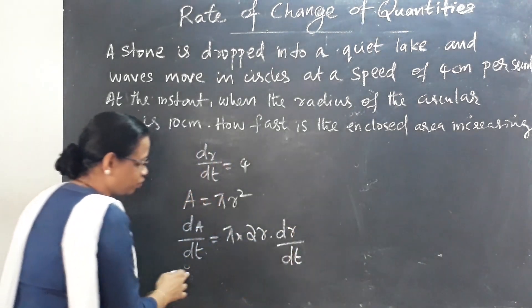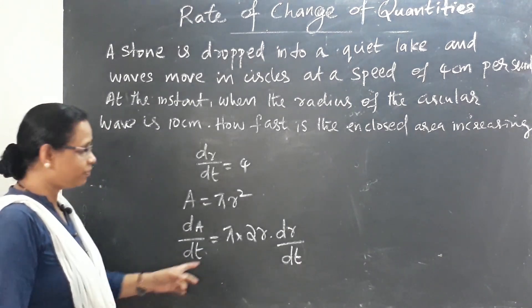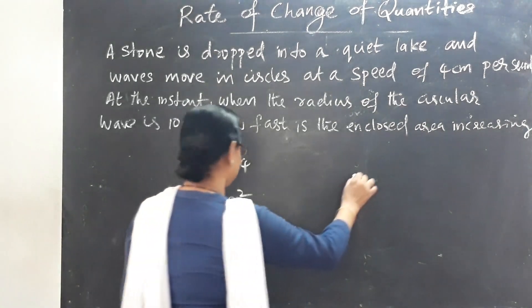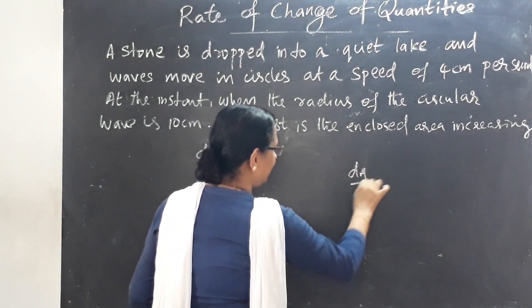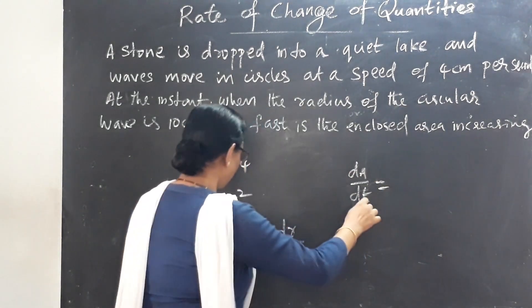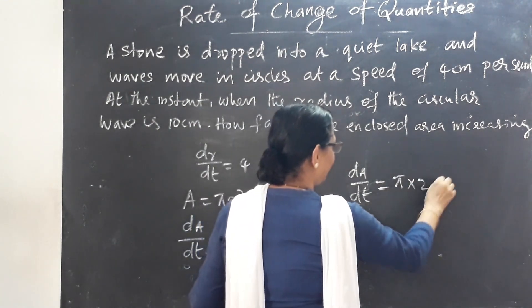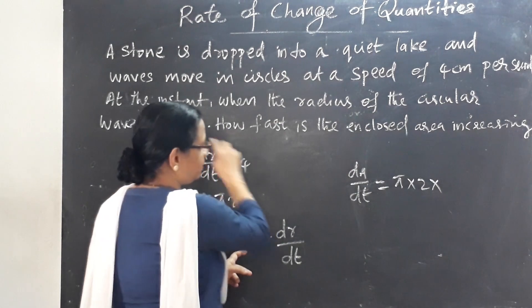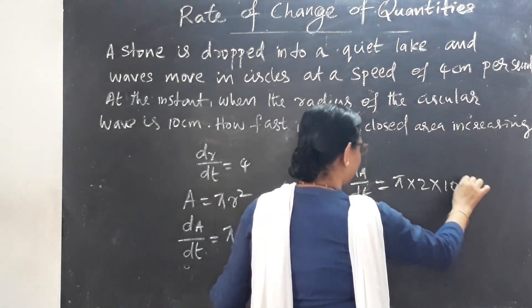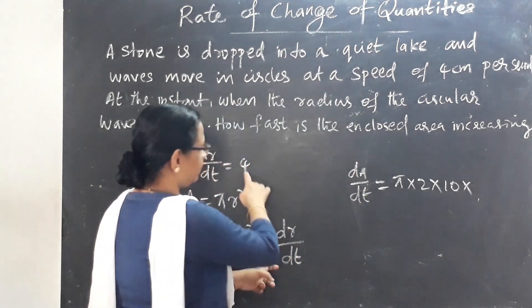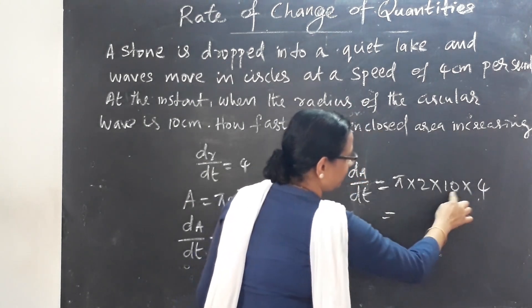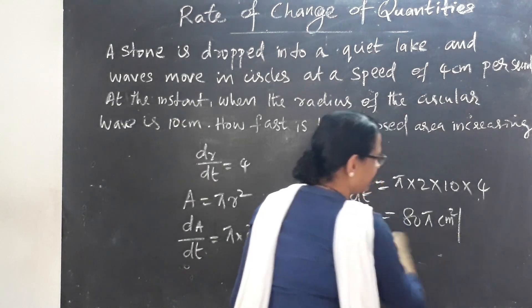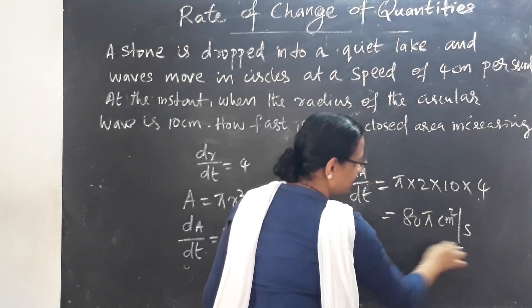Substituting r = 10 cm and dr/dt = 4, we get dA/dt = π × 2 × 10 × 4 = 80π cm² per second.